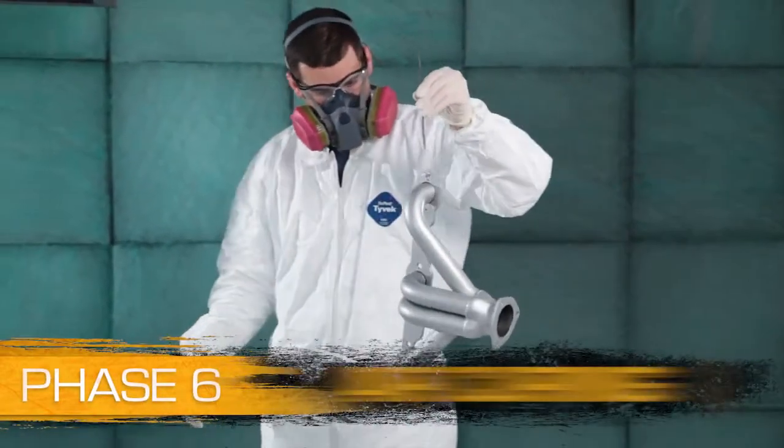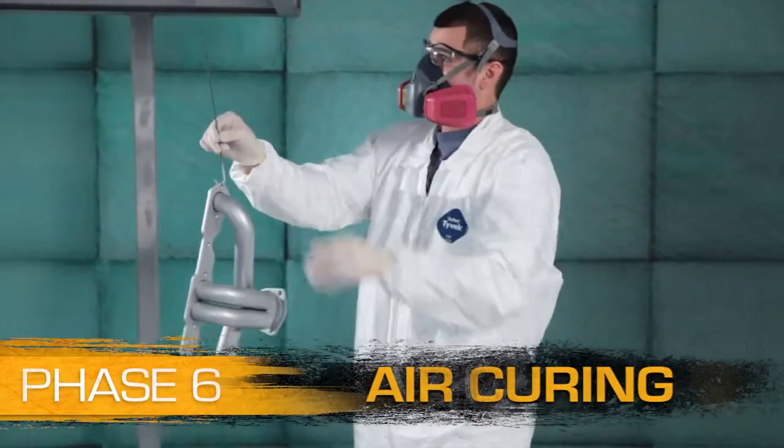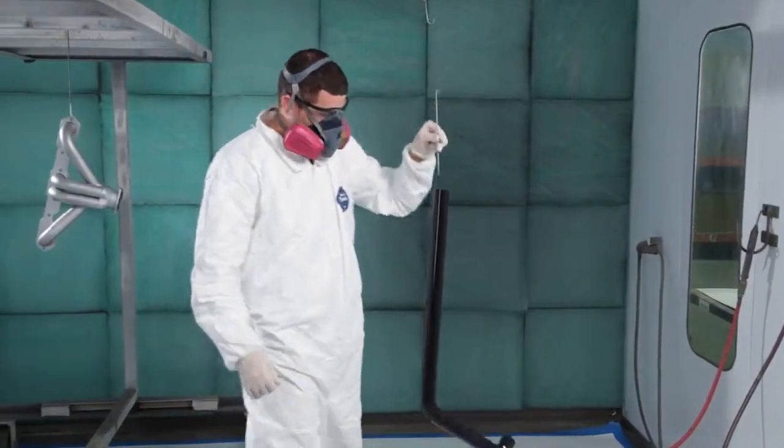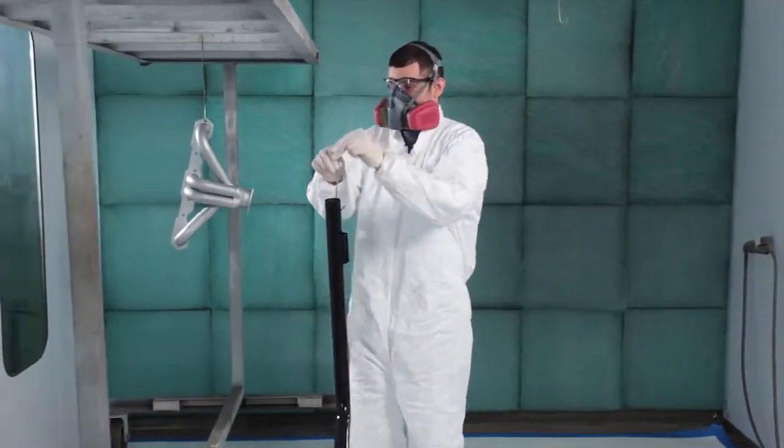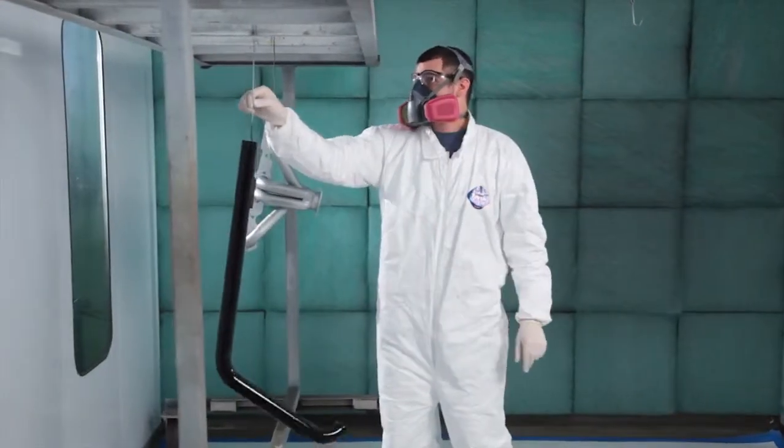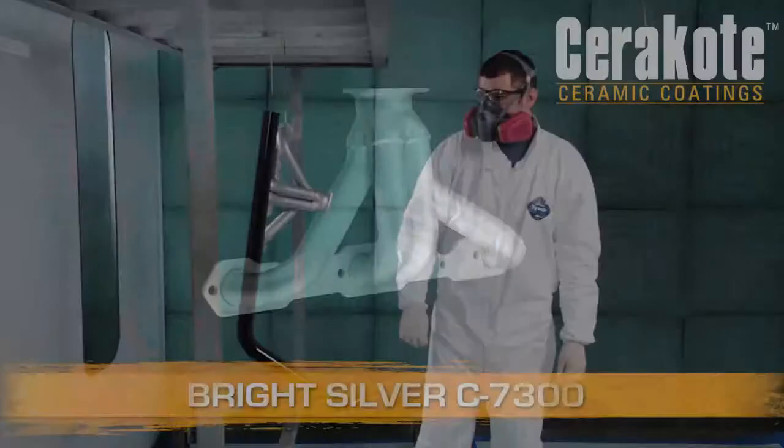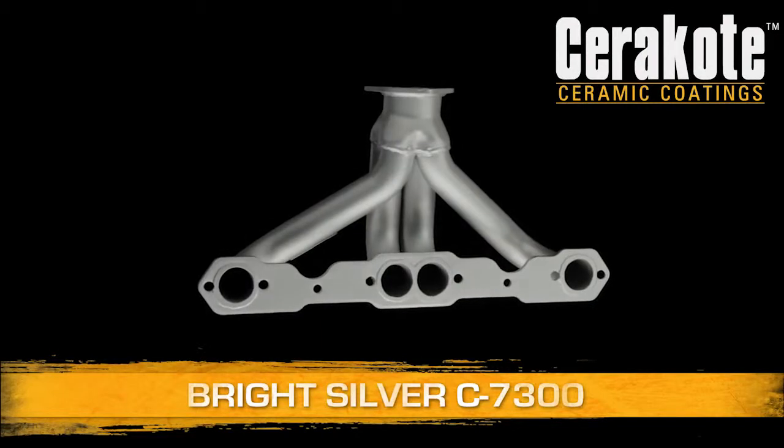Phase 6. Air Curing. Allow parts to air cure. Parts will be tack-free in approximately 35 minutes and can be packaged or installed the same day. Keep in mind that Cerakote will reach full cure in 5 days. However, you do not need to wait the full 5 days for packaging, installation, or use.